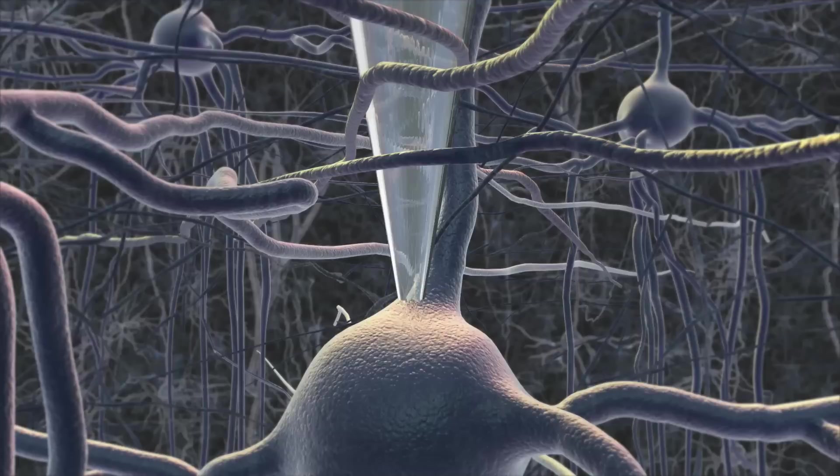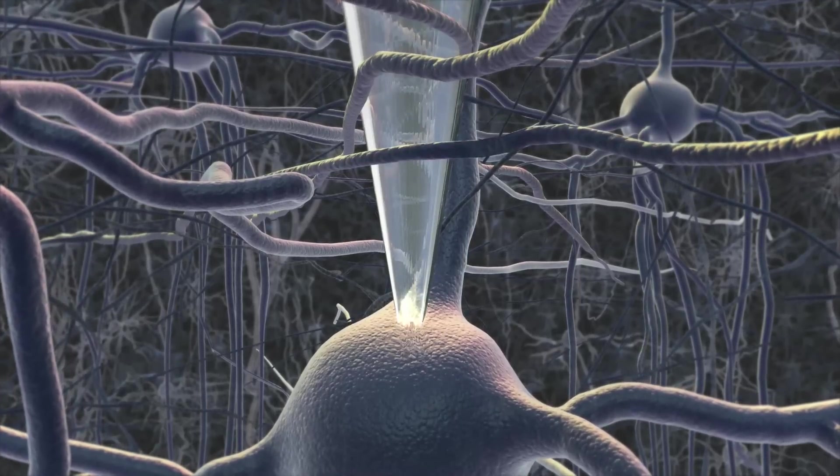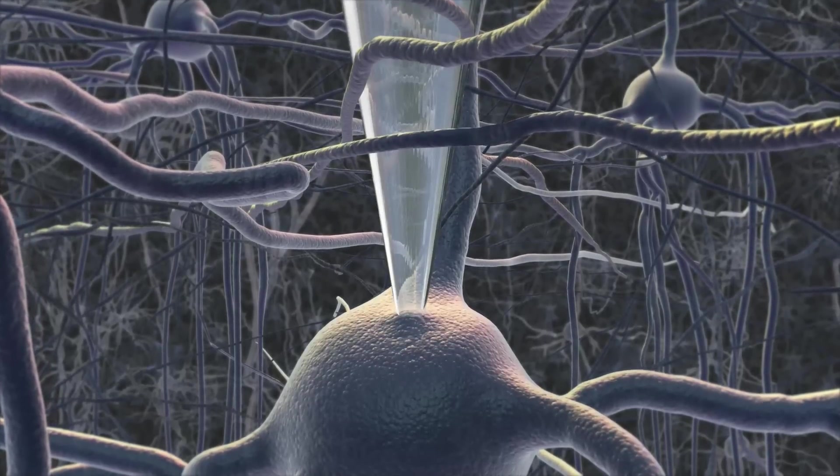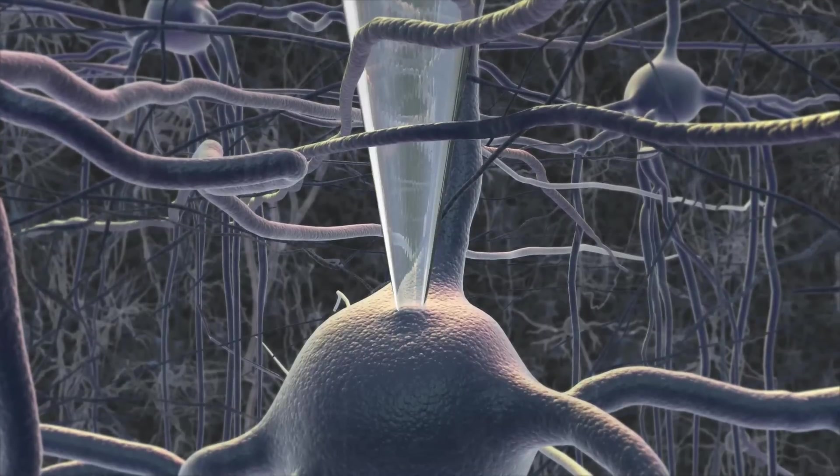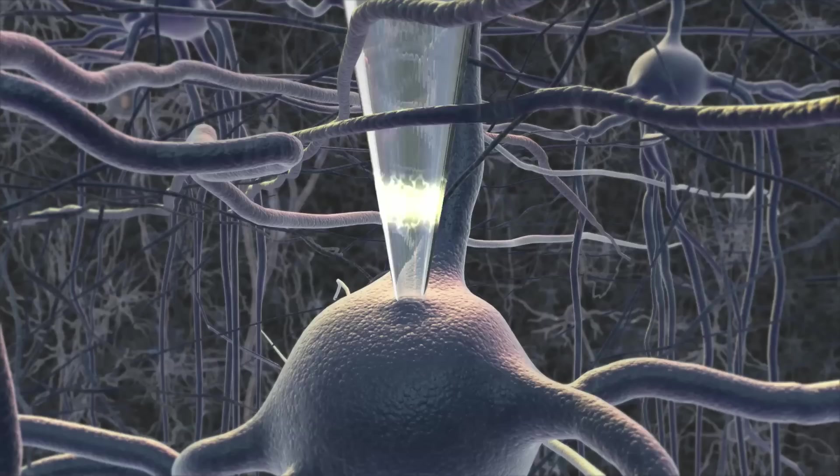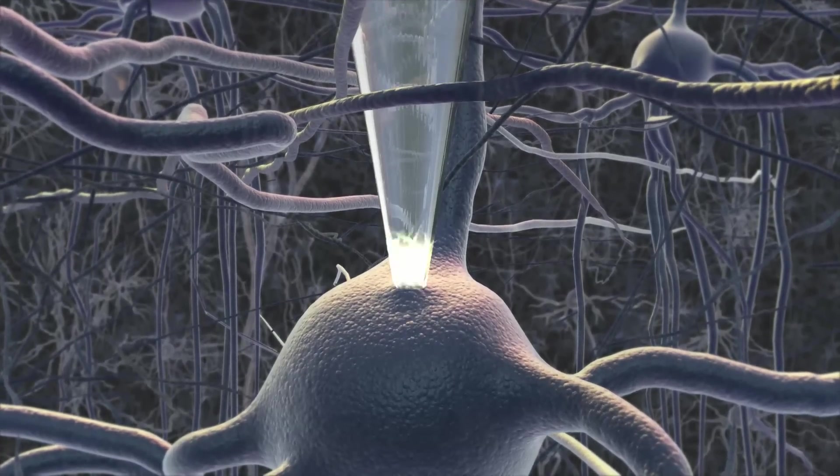When it detects the blockade of the flow of electricity, indicating a neuron to be present, the robot halts the motion of the pipette. Then the robot applies a bit of suction to the cell, bringing the cell's membrane, or boundary, in close contact with the pipette tip. This is crucial because it is important to ensure that the pipette and the cell are touching closely.